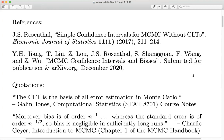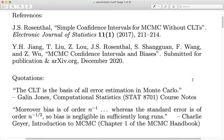Let me mention one more quotation before I start. This is from Charlie Geyer, one of the early researchers on the theoretical side of MCMC, from his introductory chapter of the MCMC handbook. He says: bias of MCMC is of order n to the minus one, whereas the standard error is of order n to the minus one-half, so bias is negligible in sufficiently long runs. Most of us have that in our heads: MCMC bias is order 1/n, variance is order 1/n, standard error is order 1/√n. That'll come up in the proof.